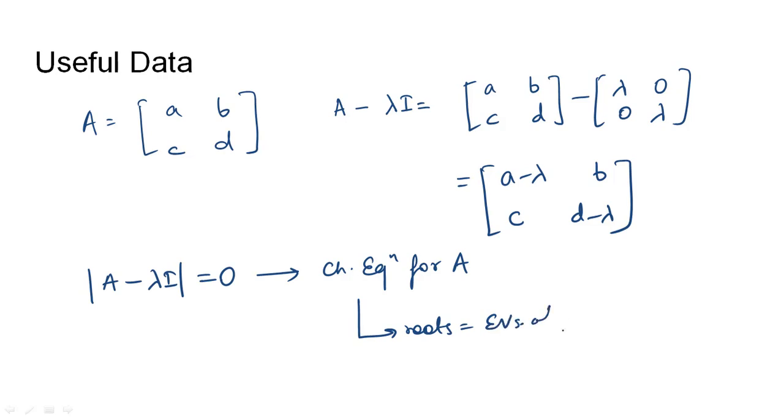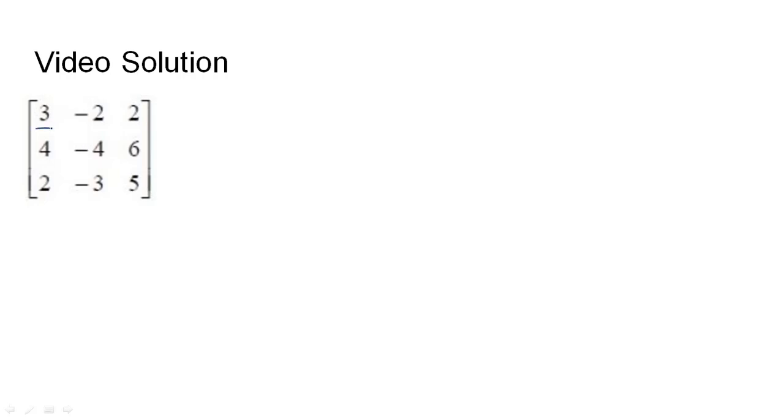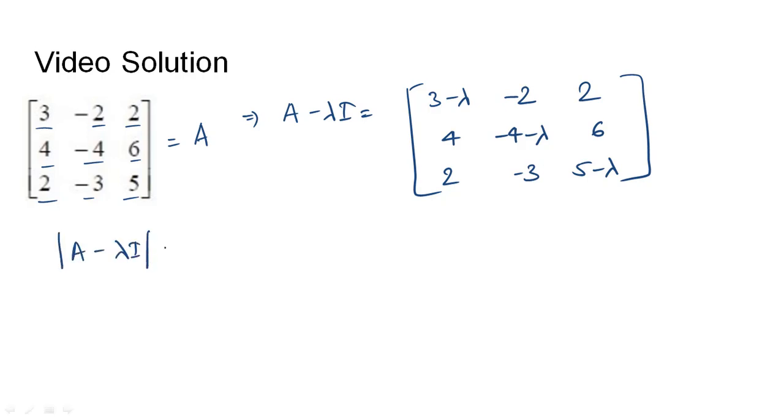In this case, we have been given this matrix: 3, -2, 2; 4, -4, 6; 2, -3, 5. Let us call this matrix A. We will find A minus lambda I, which becomes: 3 - lambda, -2, 2; 4, -4 - lambda, 6; 2, -3, 5 - lambda. Now we need to find the determinant of A minus lambda I and equate this to zero.